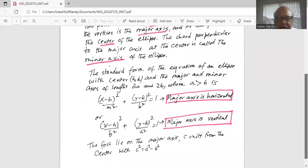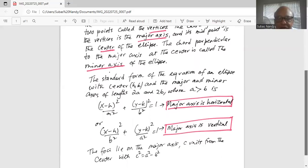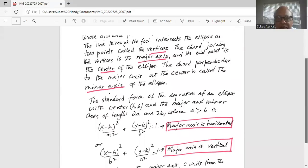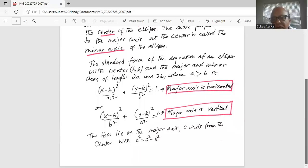Also, the foci lie on the major axis, c units from the center. The value of c is given by c² = a² - b². So c is the distance of the foci from the center point.